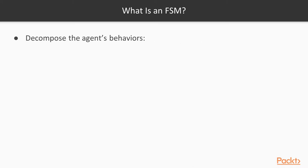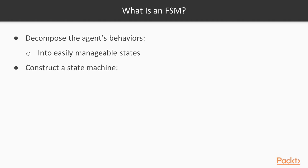To apply this idea to game AI development, we decompose our agent's behaviors into easily manageable states and construct a state machine based on transition rules. There is one simple rule though: the state machine can only be in one state at any moment.